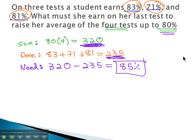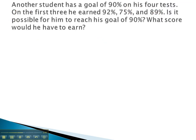Let's try another one. Here another student has a goal of 90%. That's what he's shooting for on four tests.